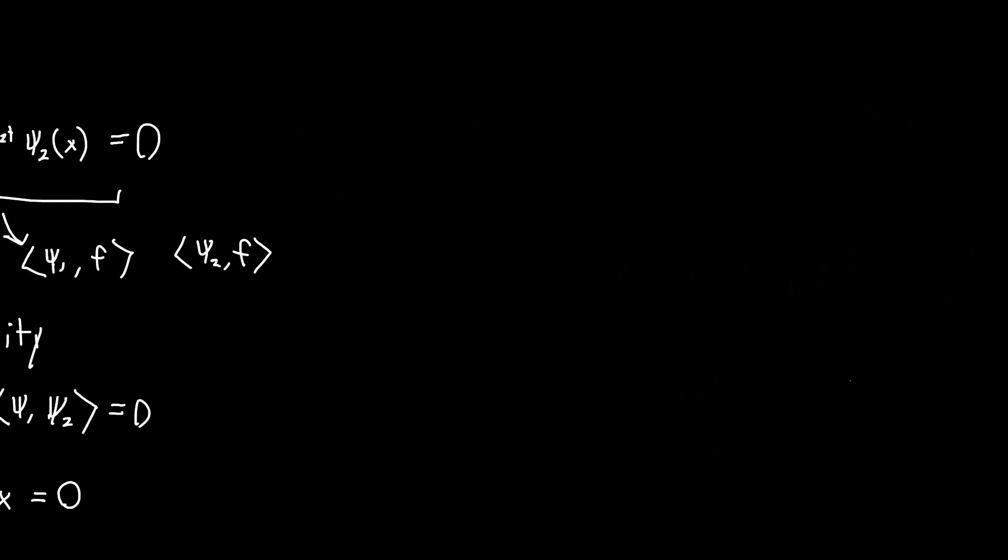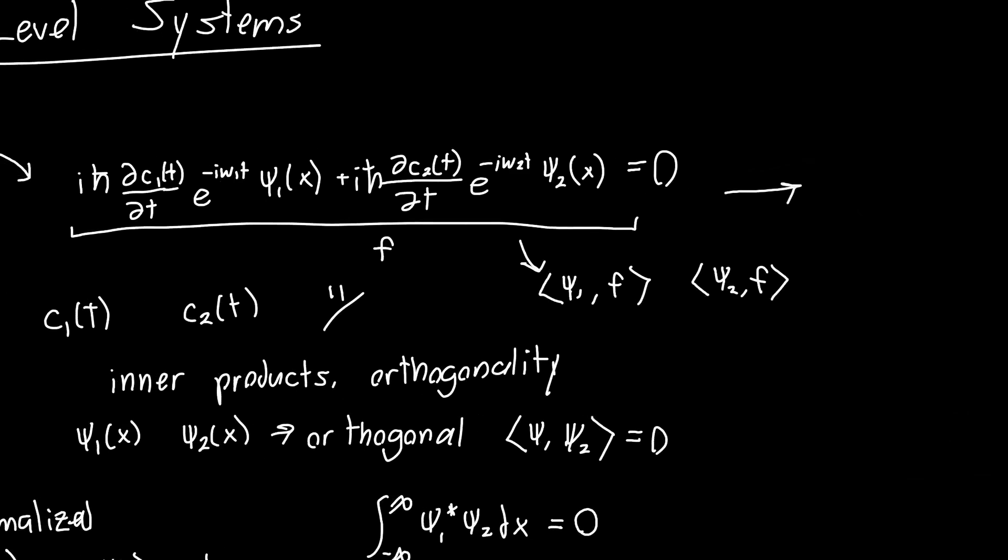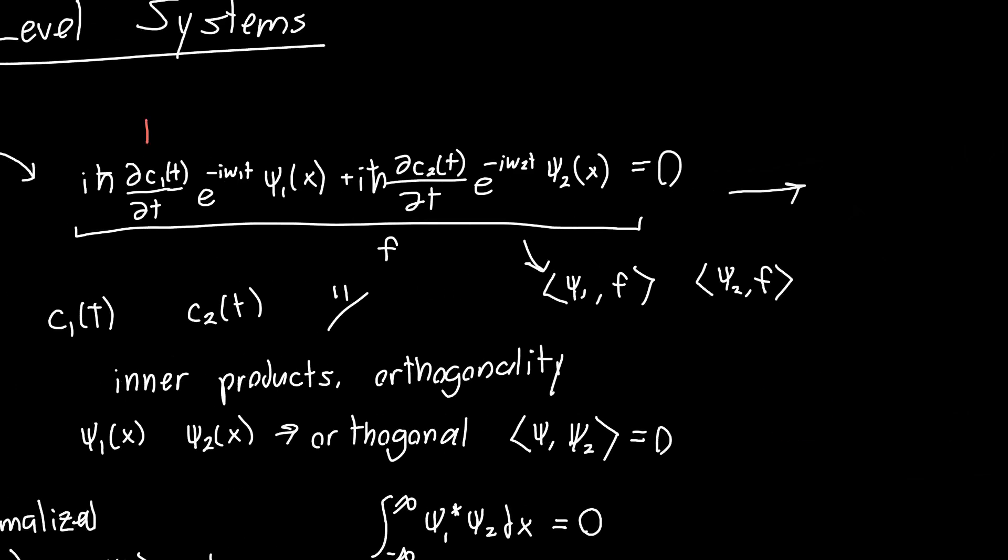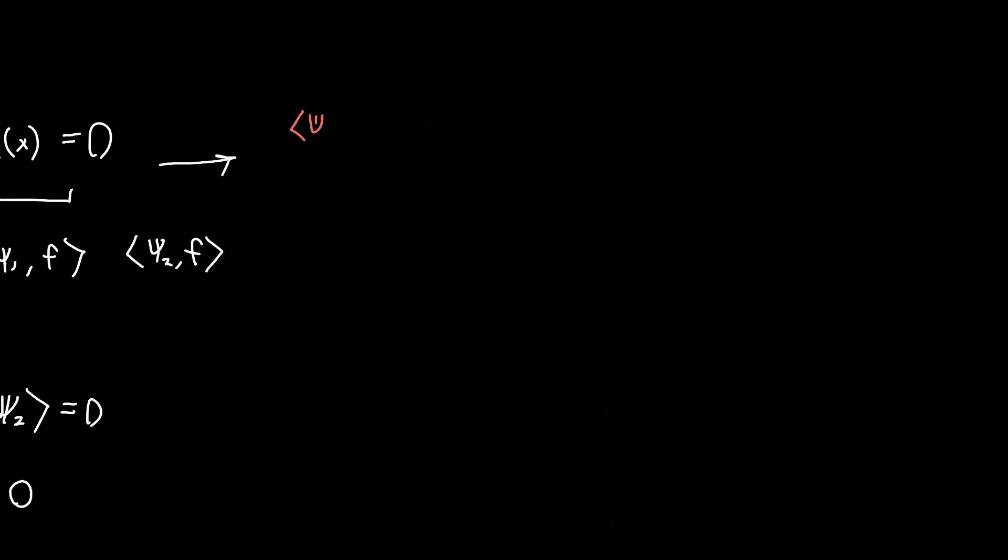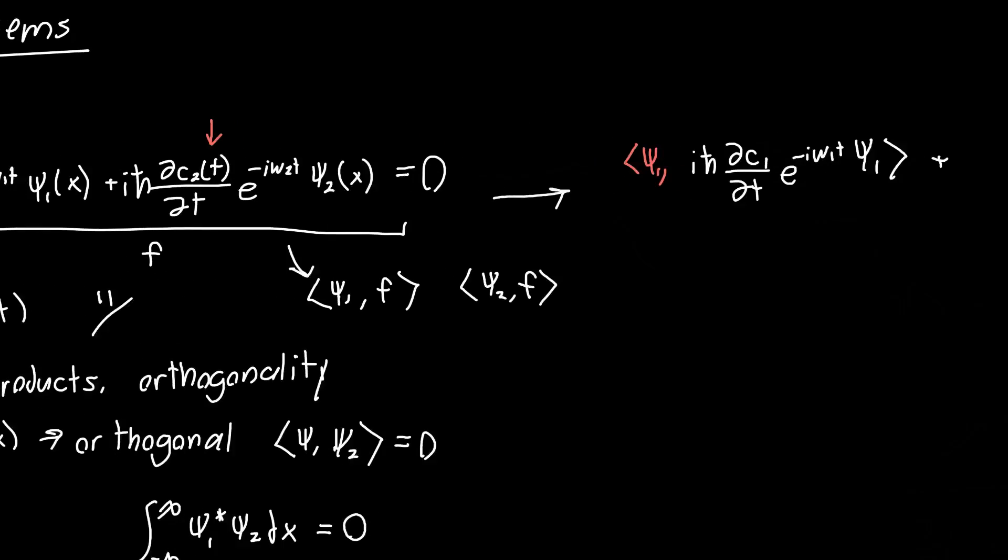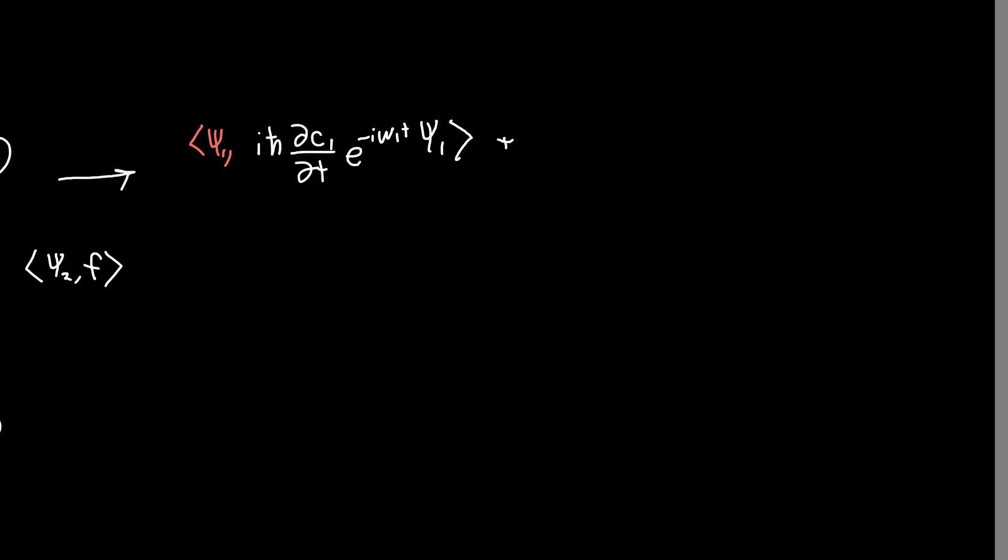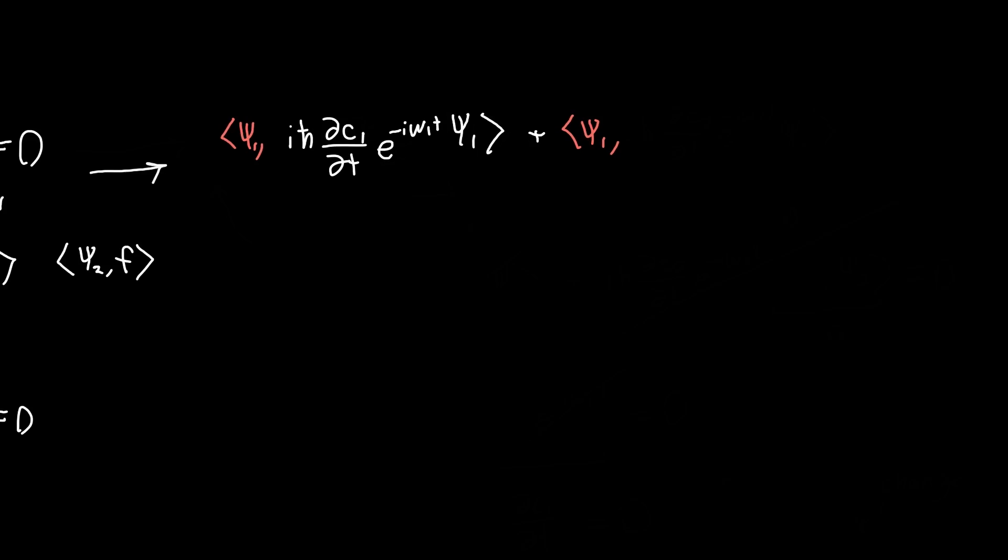Now if you do that, you should get a couple of things. So let's break this up term by term. So let's first take the inner product of psi1 with this term, and then psi1 with this term. So if we take the inner product of psi1 with our left-hand side, that's iℏ dc1/dt e^(-iω1t) times psi1. And then we need to add this to psi1 with the right-hand term, which is just in terms of c2, so iℏ dc2/dt e^(-iω2t) psi2.